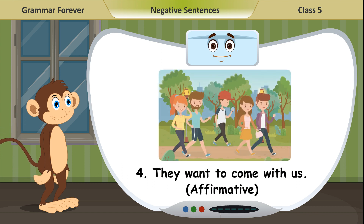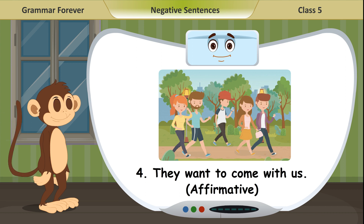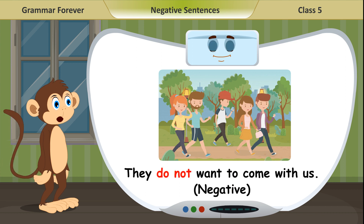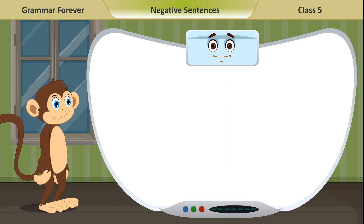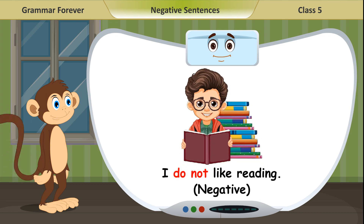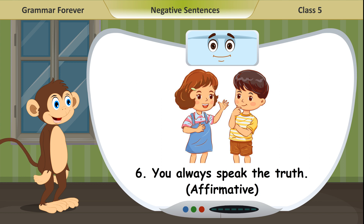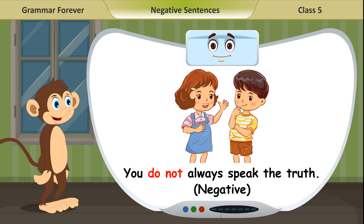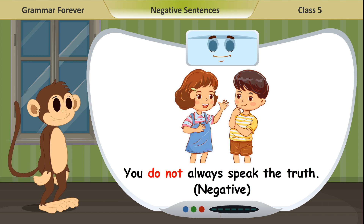4. They want to come with us (affirmative). They do not want to come with us (negative). 5. I like reading (affirmative). I do not like reading (negative). 6. You always speak the truth (affirmative). You do not always speak the truth (negative).